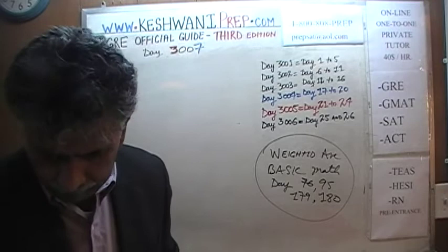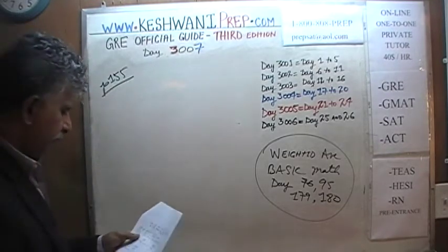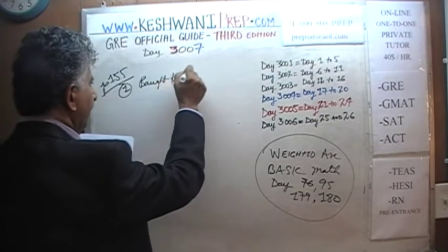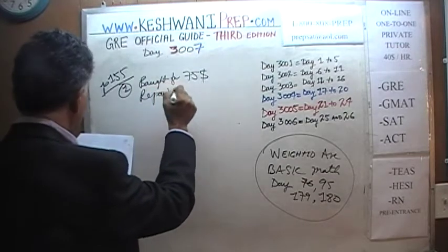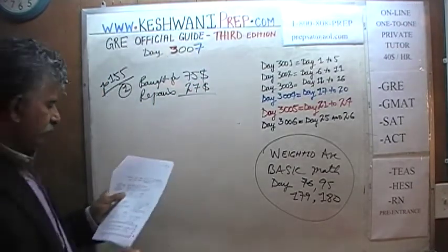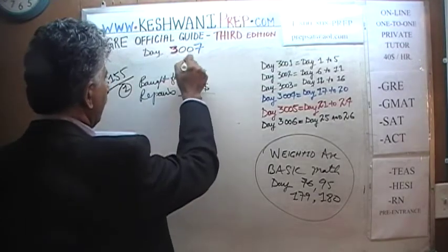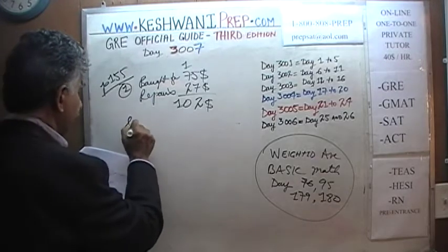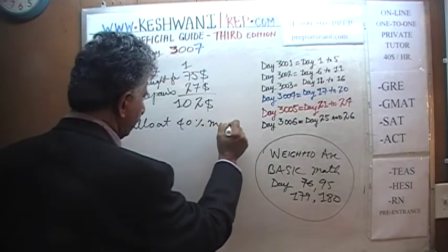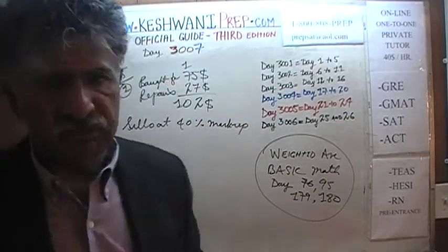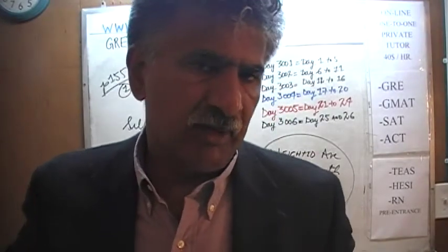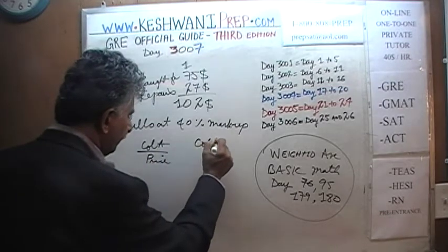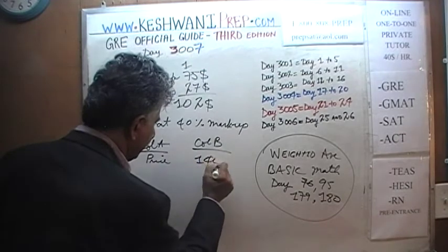We are told that Emma spends $75 buying a used bicycle. This is number 1 on page 155. She bought the bicycle for $75.00. Then she repairs it and spends another $27.00. In other words, at the end of the whole story she has spent $102.00 already. And then we are told that she sells it at a 40% markup. Column A is the price she sold it for, versus column B which is $140.00.